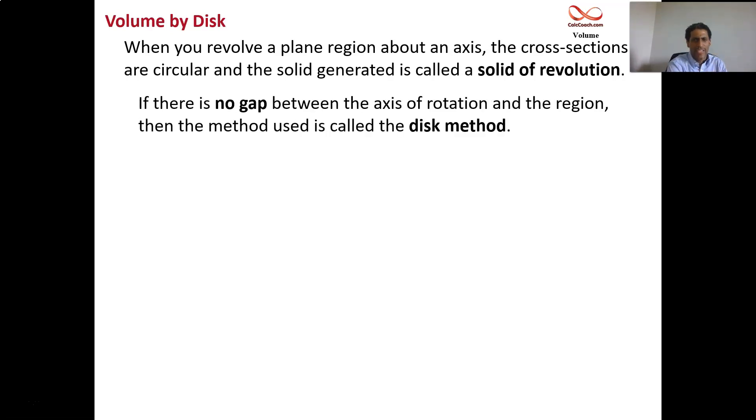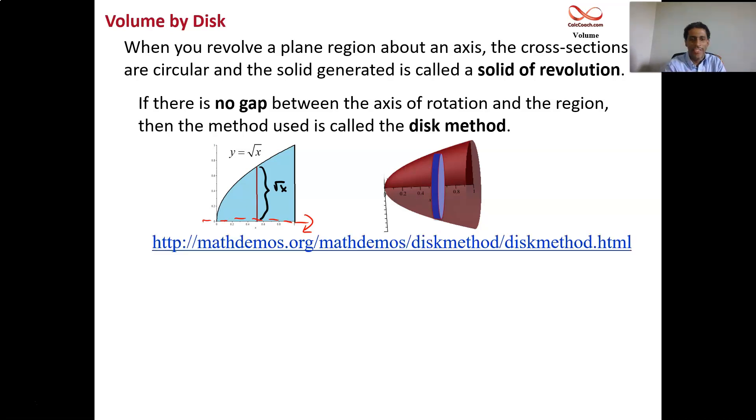I'm just going to talk about disk, but I want to bring up washer in the beginning to draw the contrast. If there is no gap between your region and your axis, then what you're doing is called the disk method. I have this region in the xy plane, revolving around the x-axis, and what I'm getting is a paraboloid. I want to find the volume of that shape. When I do that, I'll have a solid disk for my slice. This doesn't really do it justice. There's a nice website that I need you to go to and check out the animations—they're phenomenal if visualization is your key.